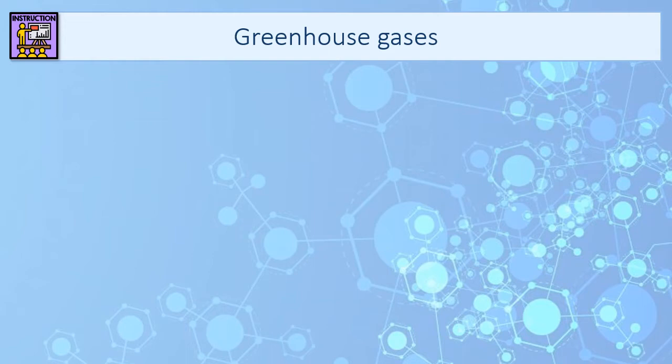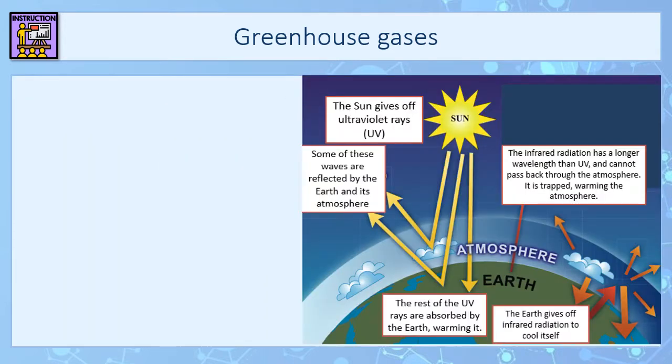The next thing we're going to cover is greenhouse gases — what they are, how they affect the earth's atmosphere, and how they affect climate change. The greenhouse effect is a perfectly natural effect, and if it wasn't happening there wouldn't be enough warmth on earth for us to survive. So the greenhouse effect is important, but we'll talk about why it might be a problem in a minute.